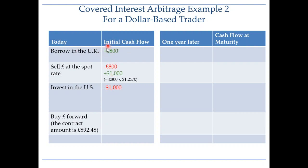At the same time, we enter a forward contract and agree to buy pounds in one year's time, because we will need to repay our pound loan. The exact amount on the contract is 892 pounds — that's what we need to pay off the loan of 800 pounds at the UK interest rate of 11.56%. The net cash flow from all these transactions at time zero, today at the outset, is zero.